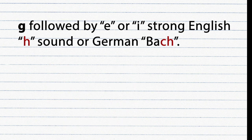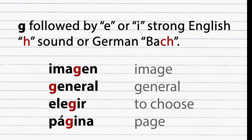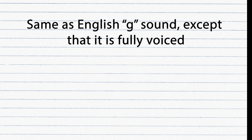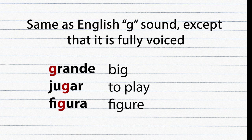When the letter G is followed by E or I, it is pronounced as a strong English H sound or like German 'Bach.' Examples: Imagen, General, Elegir, Página. In other cases, the letter G has the same sound as a typical English G, except that it is fully voiced. Examples: Grande, Jugar, Figura.